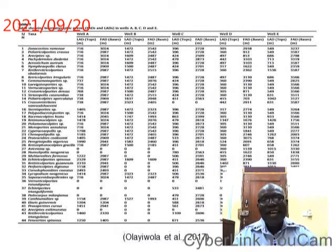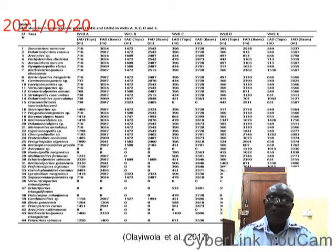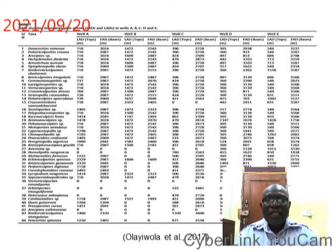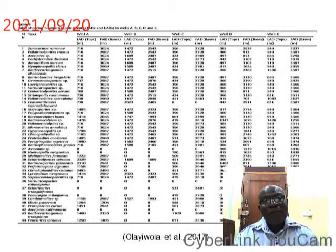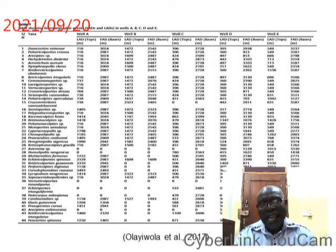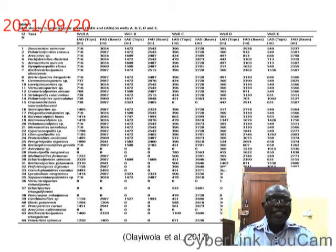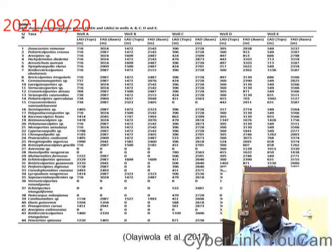The next slide shows the biostratigraphic events — that is, events of last appearance datums (LADs) and first appearance datums (FADs) — in wells A, B, C, D, and E. The last appearance datums and first appearance datums of well E were plotted on the x-axis while those of wells A, B, C, and D were plotted on the y-axis.